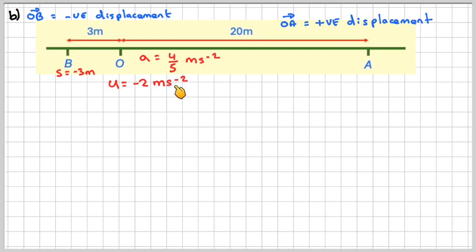The initial velocity will be minus 2 metres per second, and A is 4 fifths metres per second squared. Now, if it's going to move down here and never get here, at some stage, the velocity here will be equal to 0.